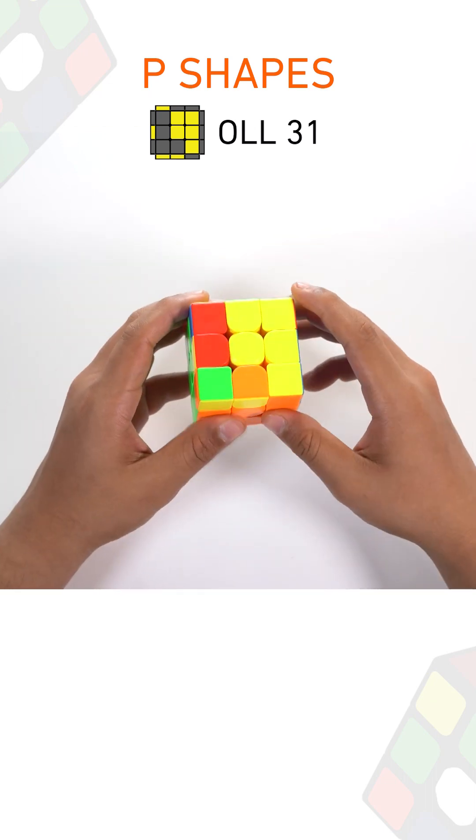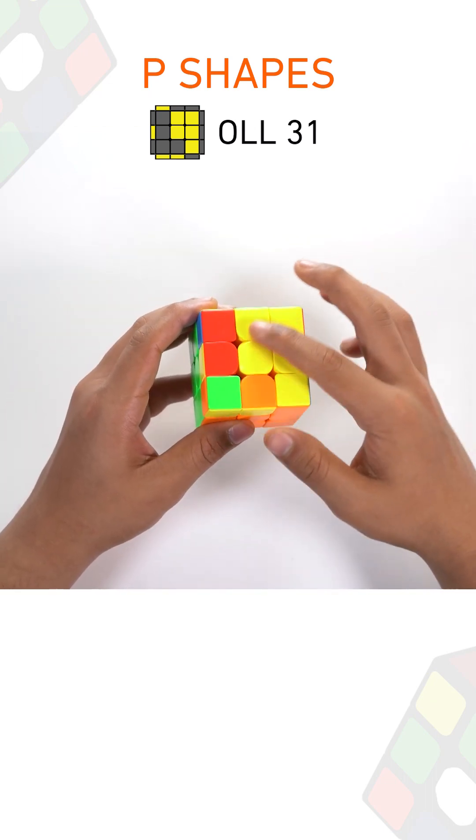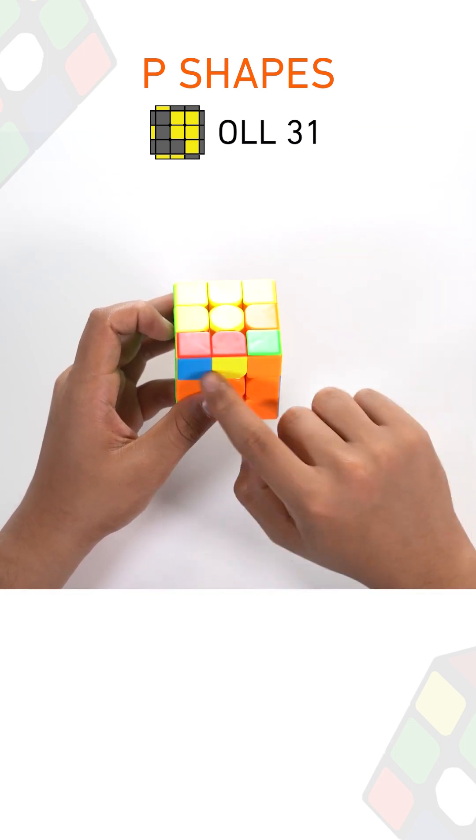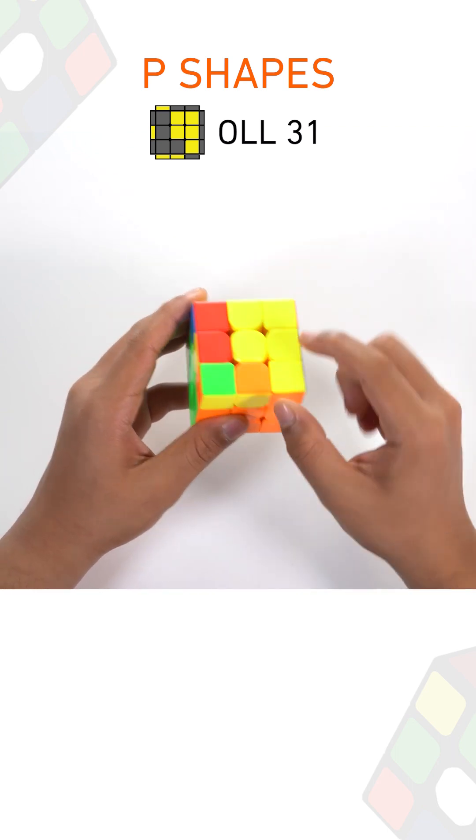The third case in the P-shape set has a very similar pattern going on, but we don't have a line of yellow over here. Instead, we have this block connected to this P-shape.